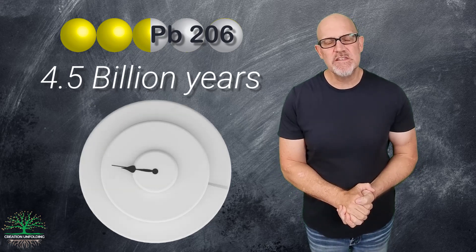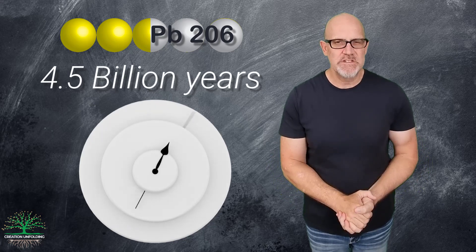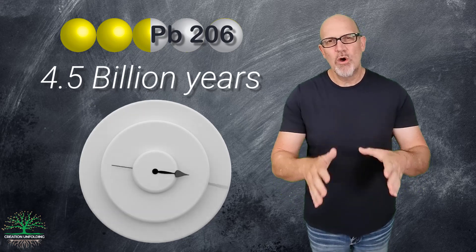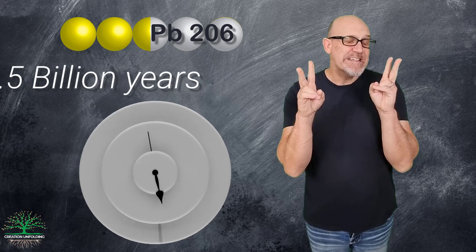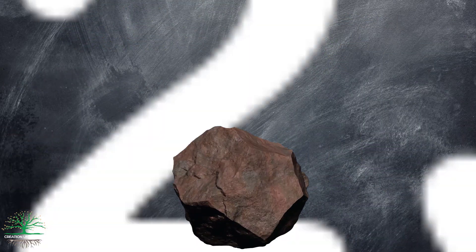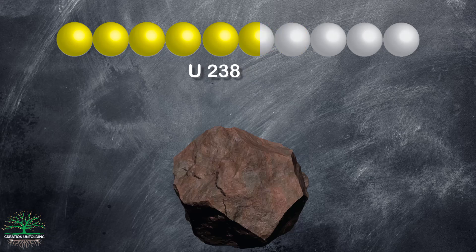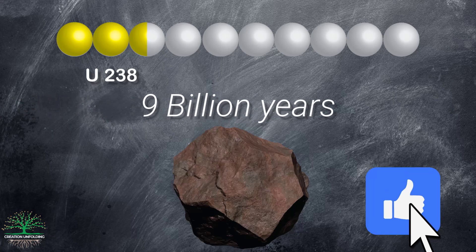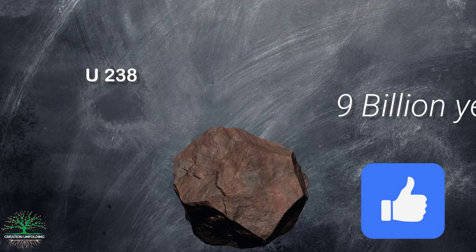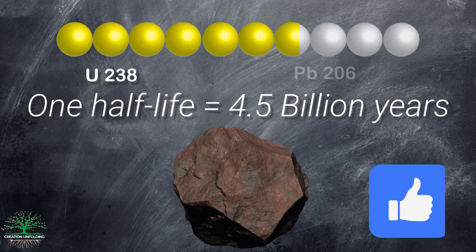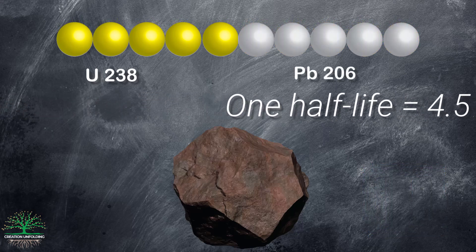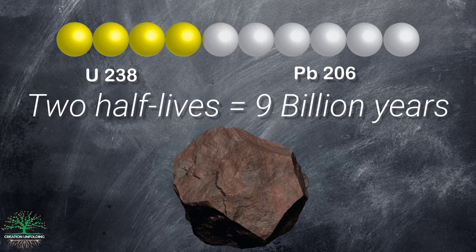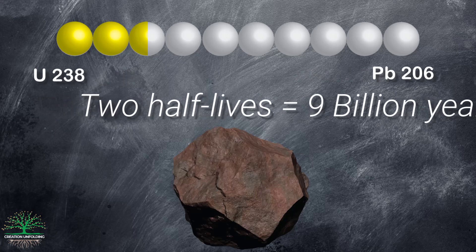Simplistically, this is how scientists apply absolute dating methods. Given what you know so far, can you date our rock if it started out with 10 atoms and it now has 2.5 atoms? If you said 9 billion years, you would be correct. Since one half-life equals 4.5 billion years, then two half-lives — the time it takes for three quarters of our original 10 atoms to decay — would be 9 billion years.